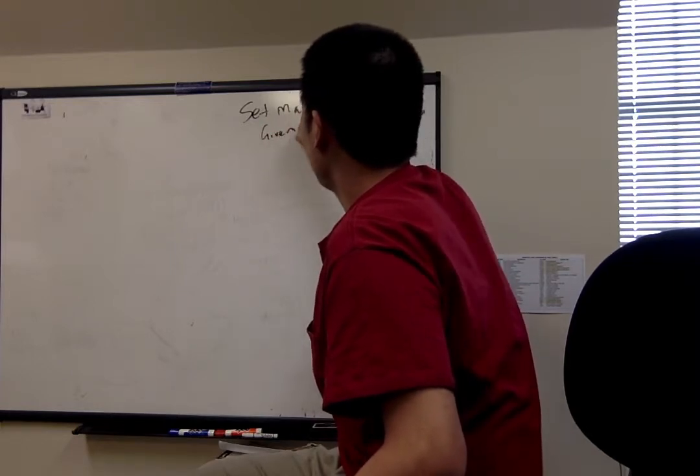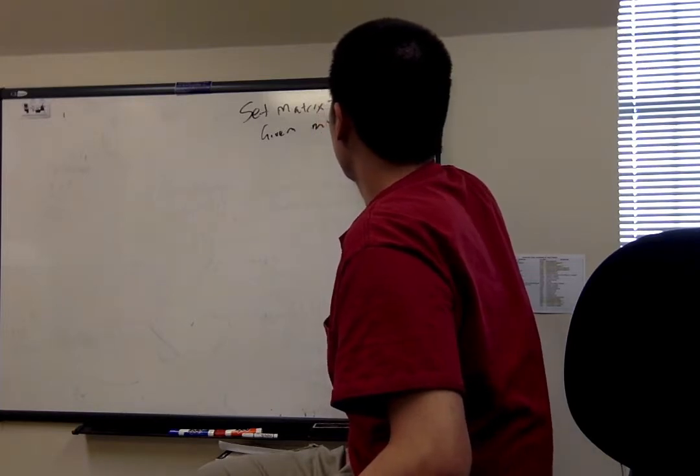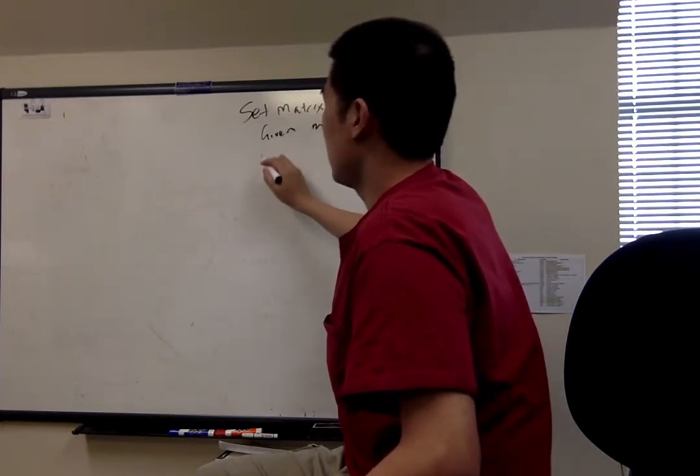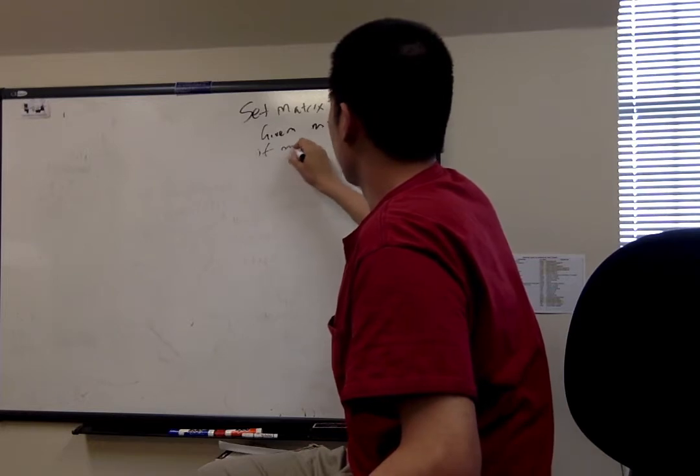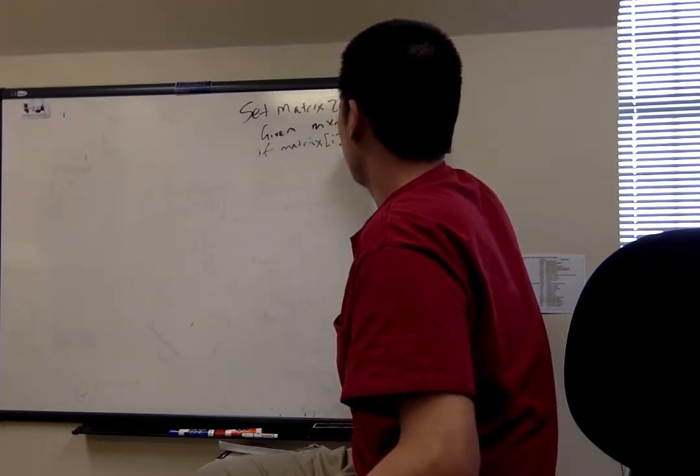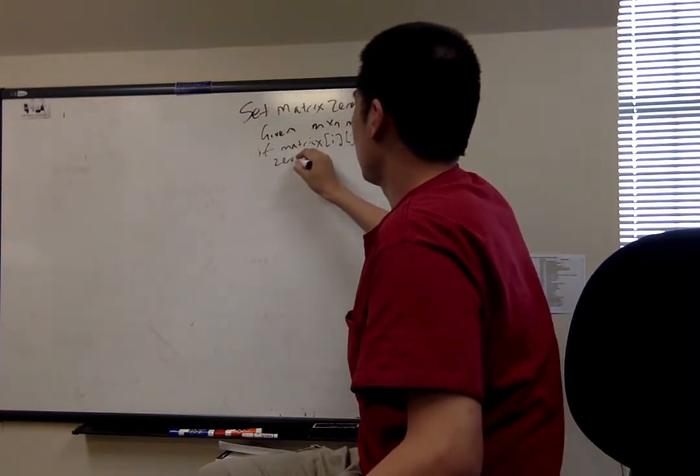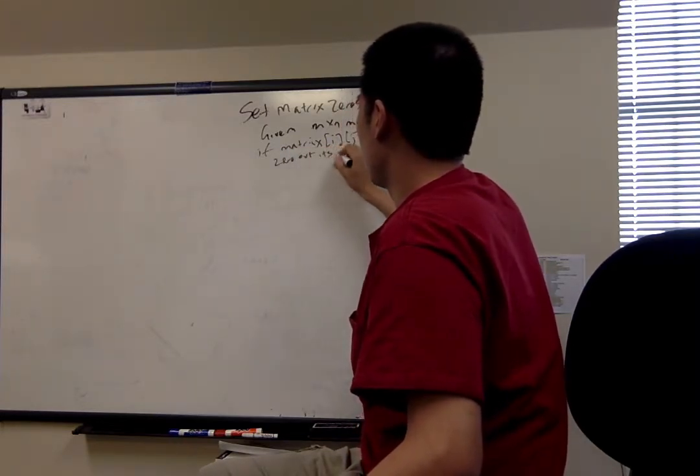Given an m by n matrix, if matrix[i][j] is 0, zero out its row and column.